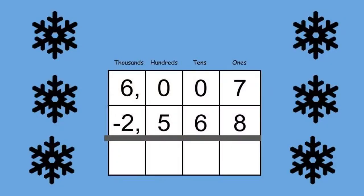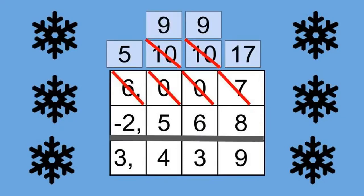Now it's your turn to try one on your own. So when you're done, check your answer. If you get the answer right, I'll have my son throw snowballs at me. Here's your answer. The difference between 6,007 and 2,568 is 3,439.